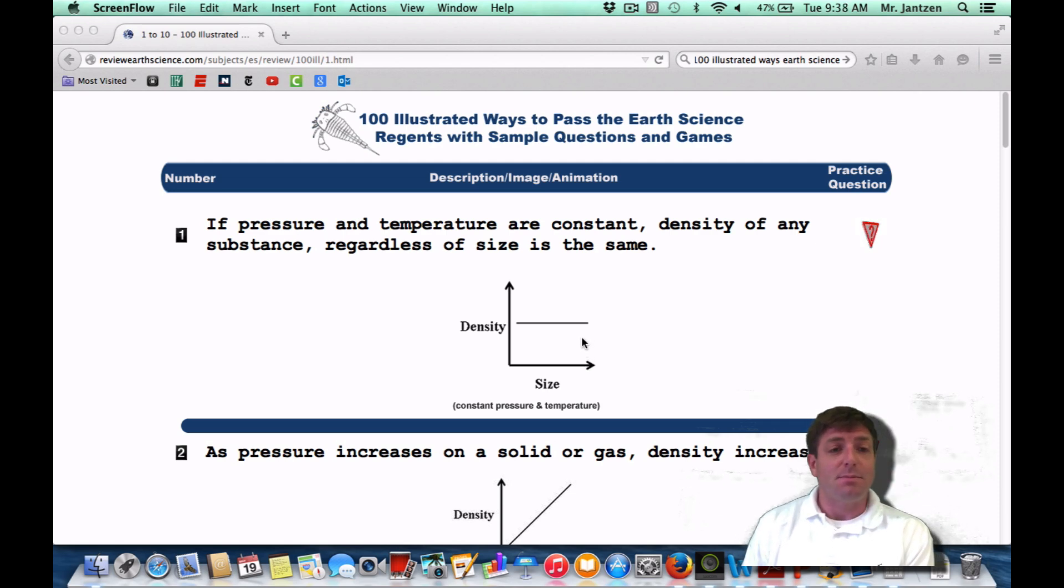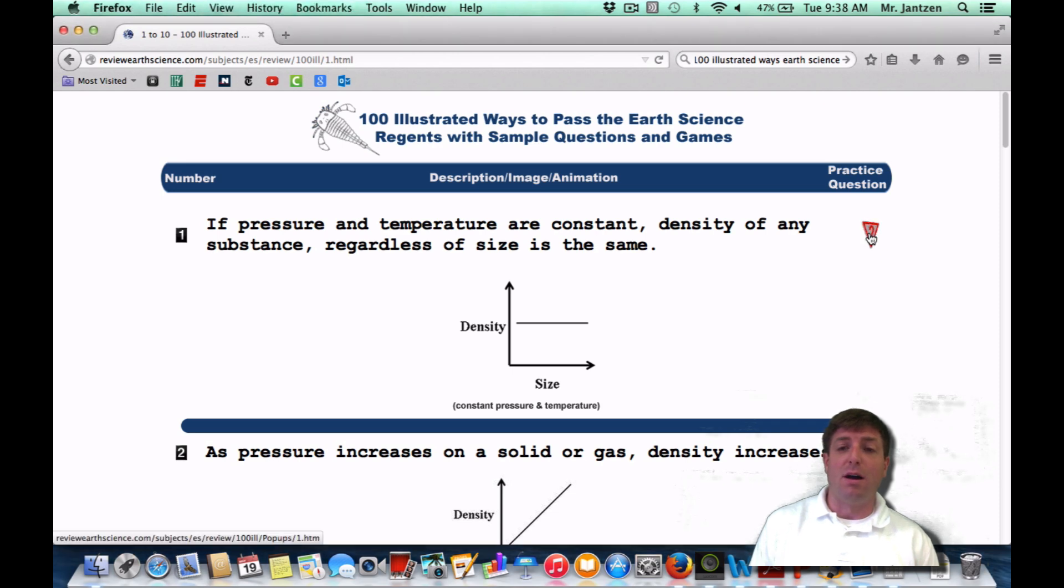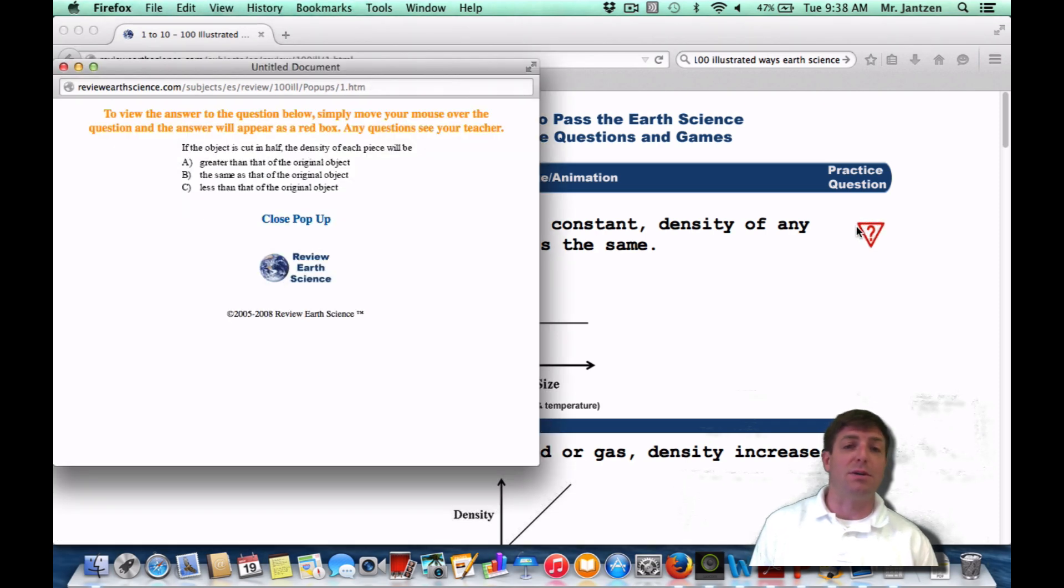Number one, if pressure and temperature are constant, the density of any substance, regardless of its size, is the same. As long as you have constant pressure and temperature, whether the size gets bigger or smaller, the density is going to remain the same.